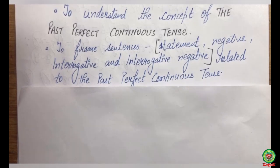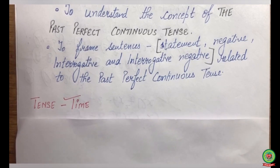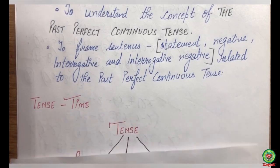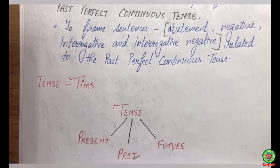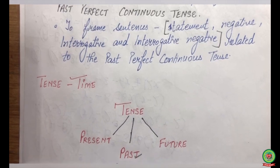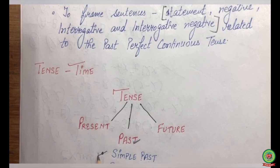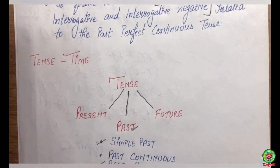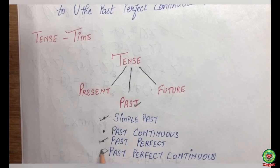In my previous session I have already discussed what is tense. Tense is time, and I have already told you that tenses are of three types: present, past, and future. We have discussed past tenses in our previous session — we have done simple past, past continuous, and past perfect. Today we will be doing past perfect continuous tense.